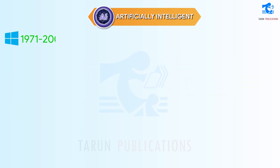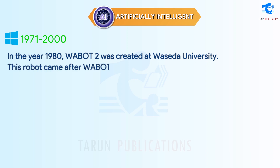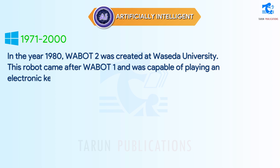1971-2000. In the year 1980, Wabot 2 was created at Waseda University. This robot came after Wabot 1 and was capable of playing an electronic keyboard.